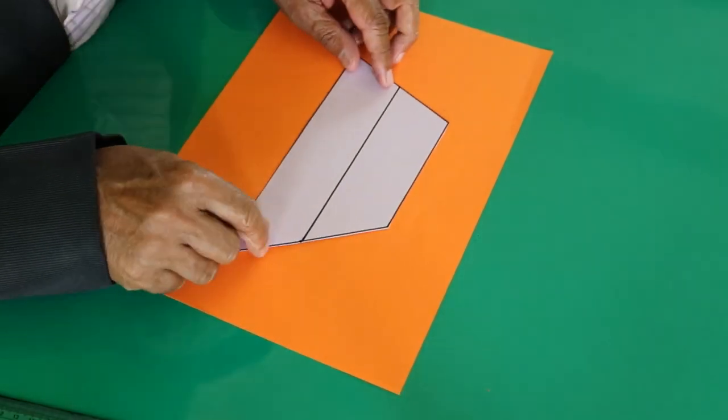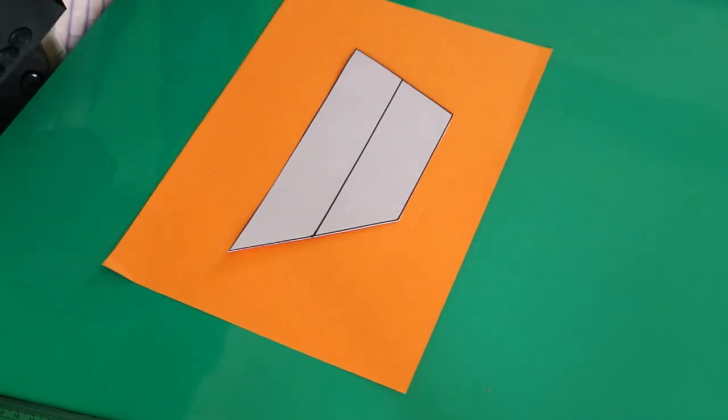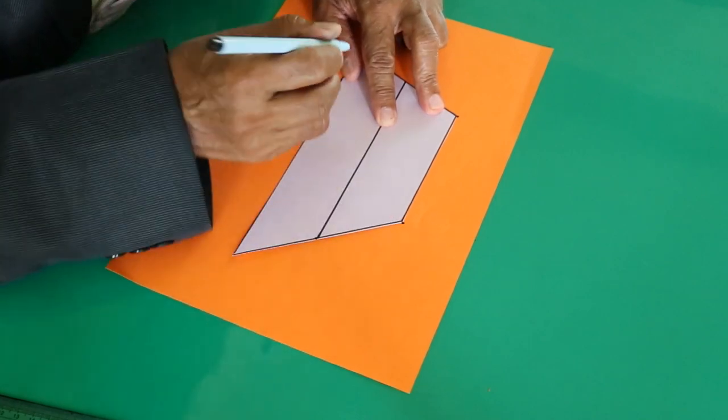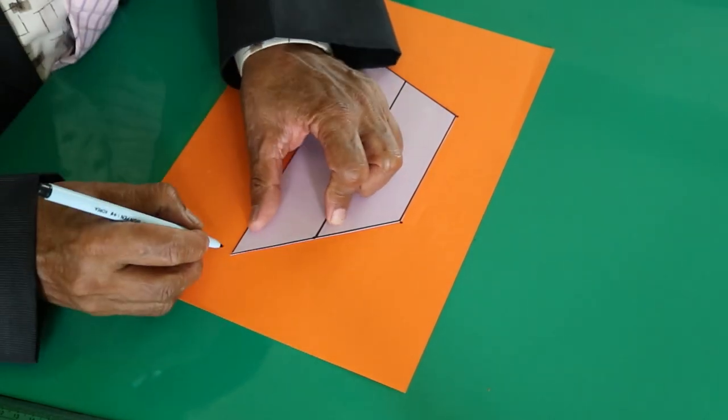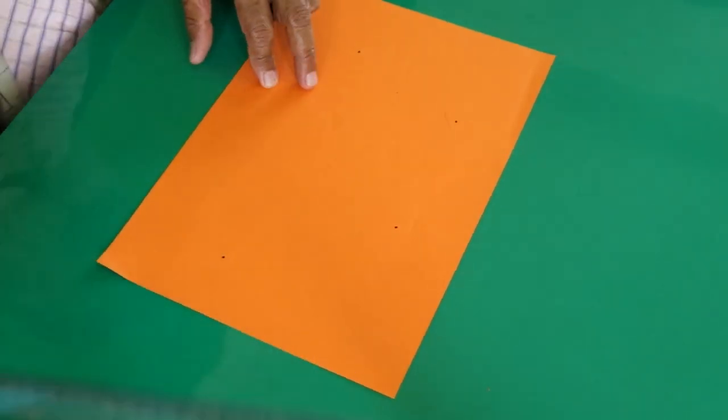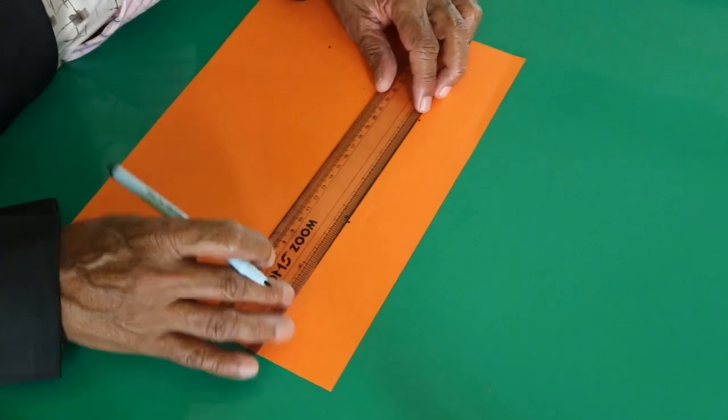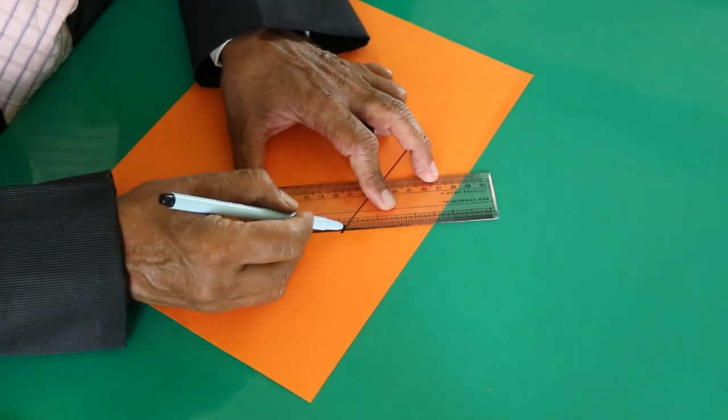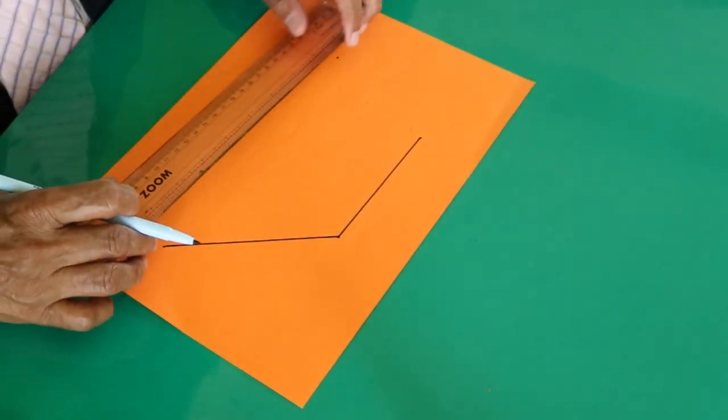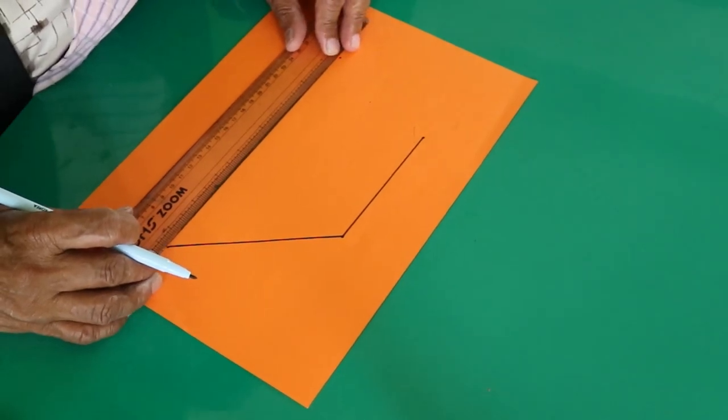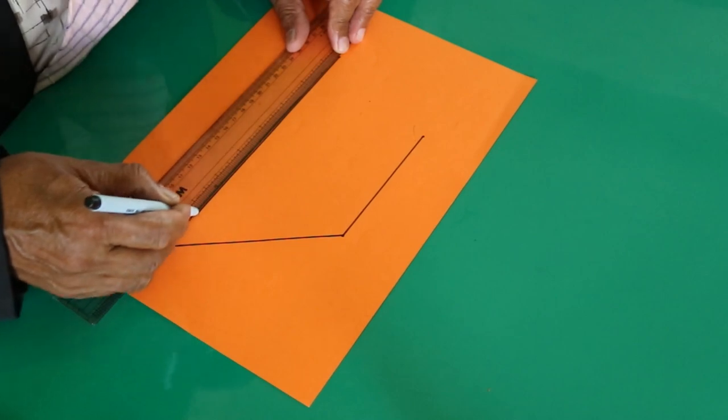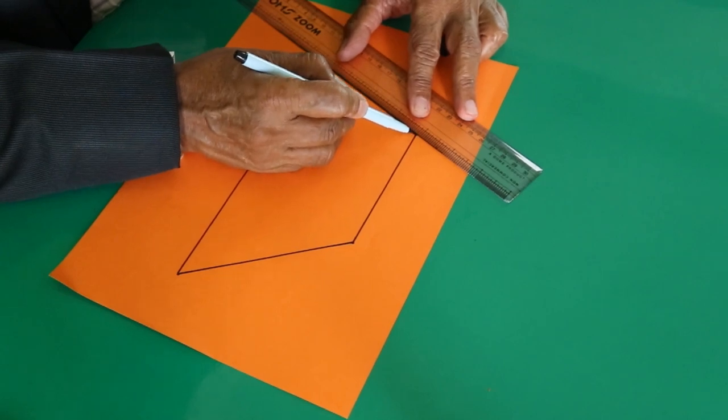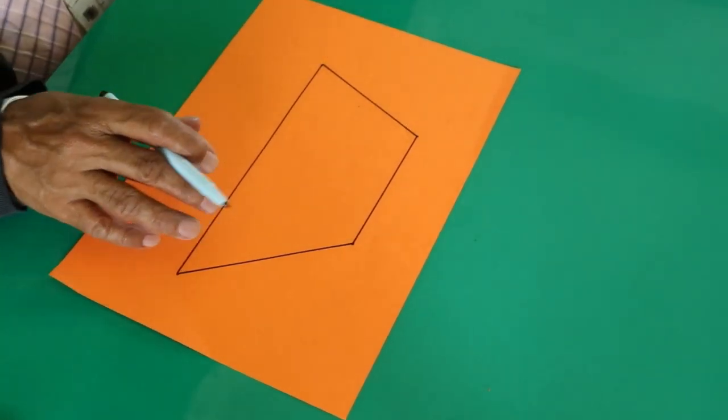Using this trapezium as the template, draw a congruent trapezium to this one on the sheet of paper. These are the vertices. Let us join them in order. This is a trapezium and it fits exactly onto that one.